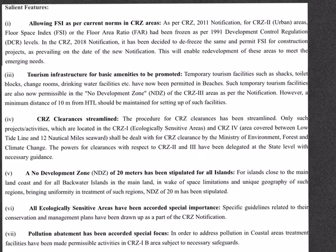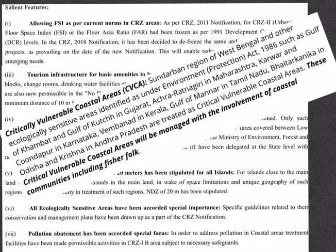As per the earlier 2011 rules, projects located in all zones — 1, 2, 3, and 4 — required the clearance certificate from the Ministry of Environment. But now, only projects located within CRZ 1 and 4 need to take permission from the Ministry of Environment, and the power for clearances with respect to CRZ 2 and 3 has been delegated at the state level. The 2019 rules also provide for a no-development zone of 20 meters for all islands, necessary due to space limitations and unique geography of such regions. To address pollution in coastal areas, treatment facilities are to be located in CRZ 1 areas.